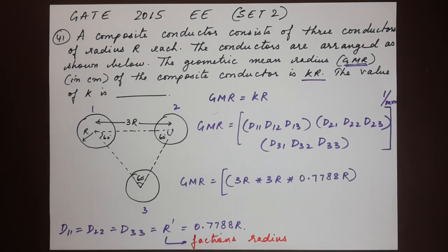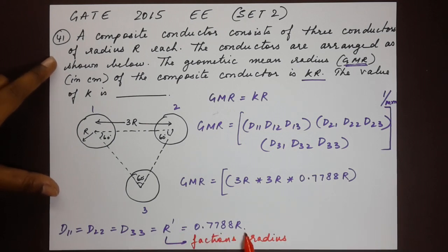So this doesn't have an internal flux linkage, but it has the same inductance as the original conductor. So that's why it has this phrase of factions radius, that name is given to it. So d11, d22, d33 have a standard value of 0.7788r. So we have put that here.